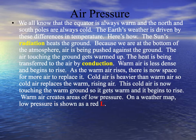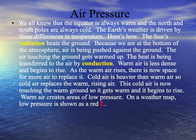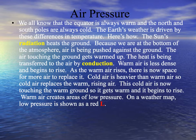The sun's radiation heats the ground. The sun's radiation is energy from the sun that travels through space. This radiation touches the ground and changes into heat. Because we're at the bottom of the atmosphere, air is being pushed down against the ground. This air touching the ground gets warmed up, and the heat is being transferred to the air by a process called conduction.